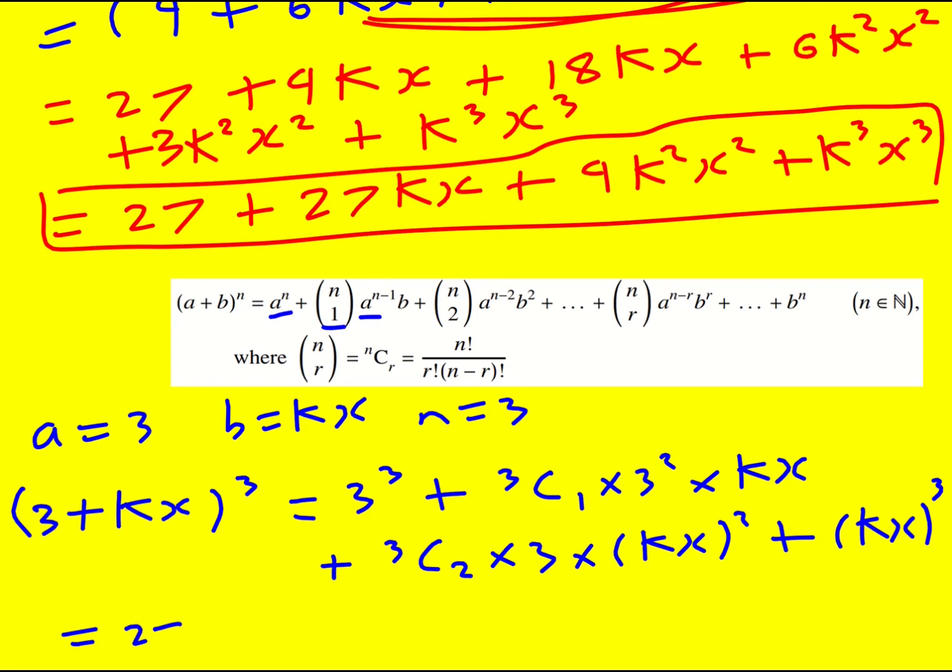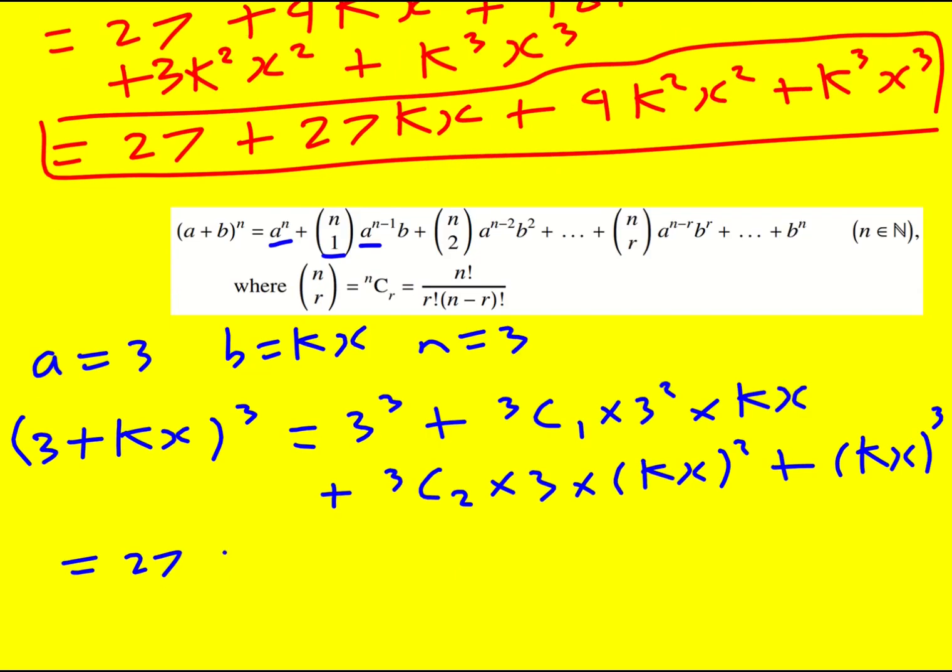3 cubed is 27. 3c1 is actually just 3, so 3 times 3 squared, 27 again. 3c2 is the same as 3c1, so it's also 3, giving 9k squared x squared, and then k cubed x cubed here.